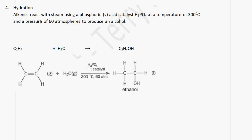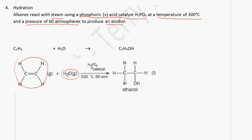The next type of reaction is hydration. Alkenes react with steam using a phosphoric acid catalyst, which is H3PO4, at a temperature of 300 degrees Celsius and a pressure of 60 atmospheres to produce an alcohol. If we start with ethene plus steam, it gives us ethanol. You need the phosphoric acid catalyst, a temperature of 300 degrees Celsius, and a pressure of 60 atmospheres. This reaction is called hydration.